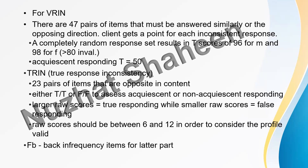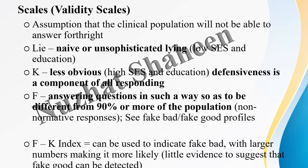Each inconsistent response pair gives the client a point. A completely random response set results in T-scores of 96 for VRIN and 98 for F. For TRIN (True Response Inconsistency), 23 pairs of items are completely opposite in content. A large raw score indicates true responding while a smaller raw score indicates false responding; raw scores should be between 6 and 12 for a valid profile.